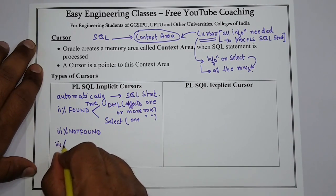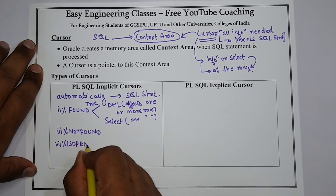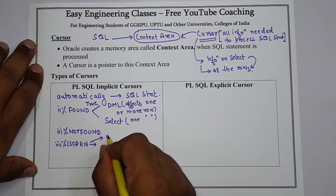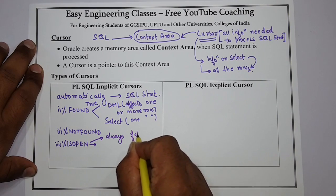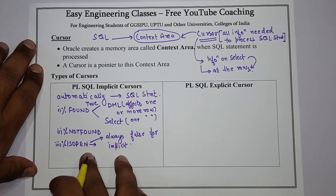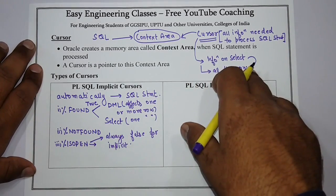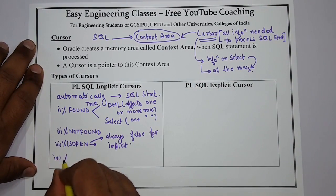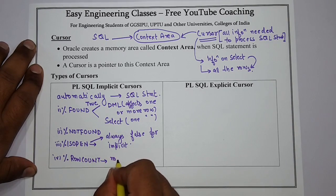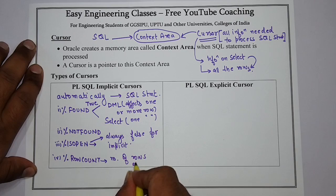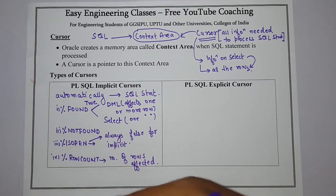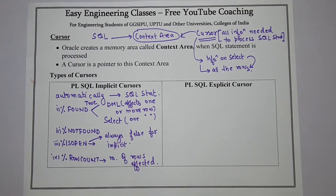The third attribute is %ISOPEN, which always returns false for an implicit cursor, but returns true for an explicit cursor if that cursor is currently open. The fourth is %ROWCOUNT, which returns the number of rows affected.